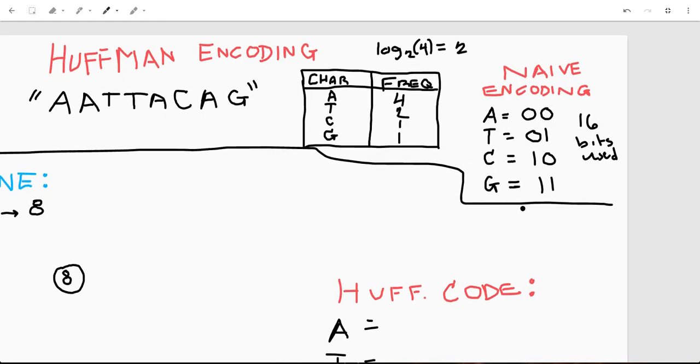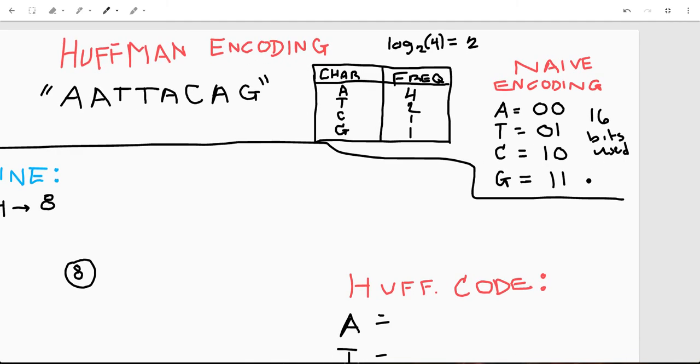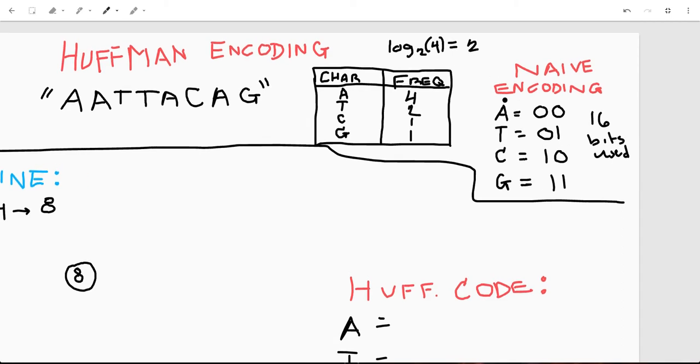Over here I kind of made like a naive encoding using just binary representation of each of these characters, and because of the properties of binary, you only have a two-character alphabet.